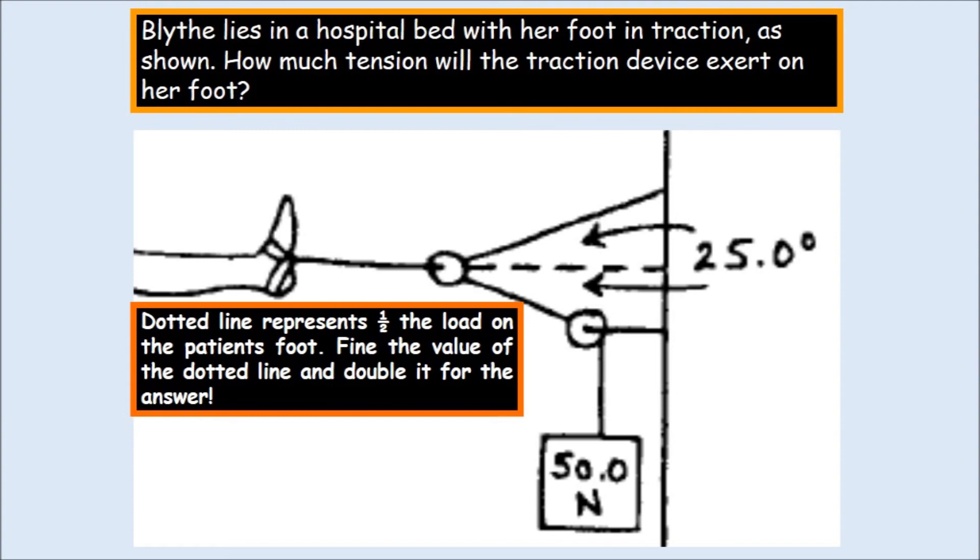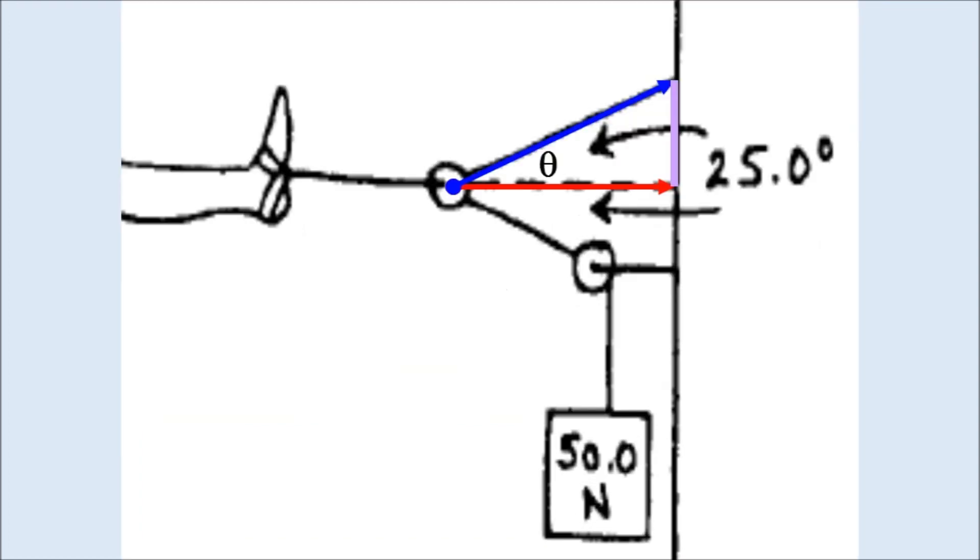So we know really everything but the dotted line. And the drawing in the next slide will show you what we know precisely. We know that the hypotenuse, the blue line is 50 Newtons. So above and below is 50 Newtons. So we know that we can solve for the red line. We know 25 degrees.